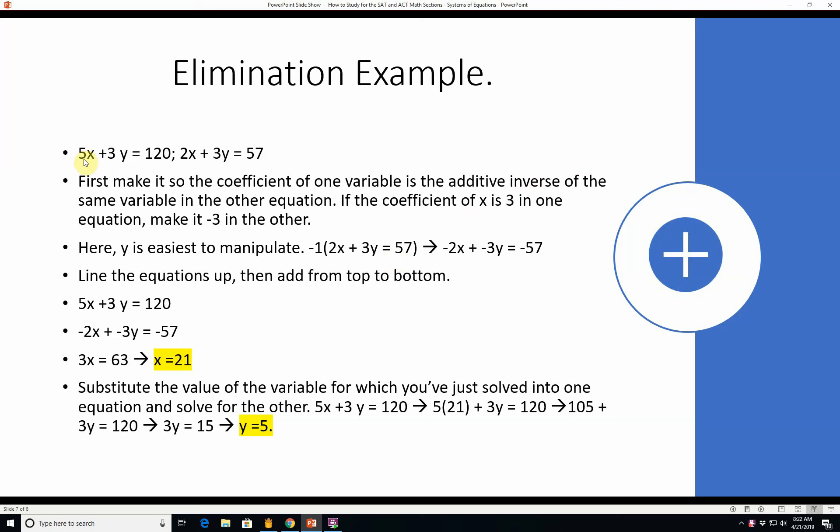Here's an elimination example. Let's take 5x plus 3y equals 120 and 2x plus 3y equals 57. First we want to make it so the coefficient of one variable is the additive inverse of the same variable in the other equation. So here y is the easiest to manipulate. We can just multiply everything in the equation 2x plus 3y equals 57 by negative 1. So we get negative 2x minus 3y equals negative 57.